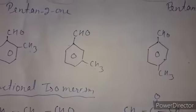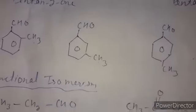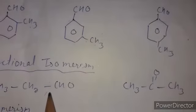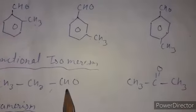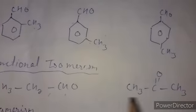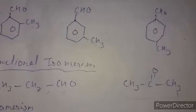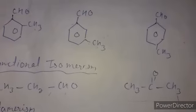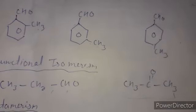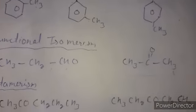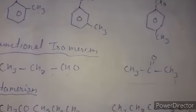The third type is functional isomerism. With three carbons, six hydrogens, and one oxygen — C₃H₆O — the formula can represent either propanal (aldehyde) or acetone (ketone). Aldehydes and ketones are functional group isomers of each other, just as alcohols and ethers are.